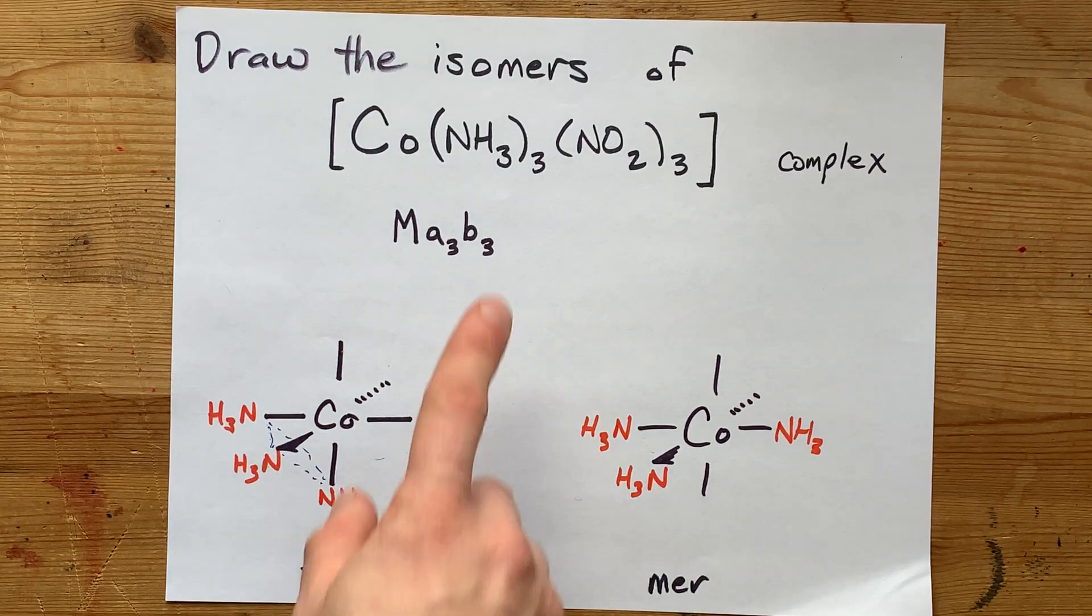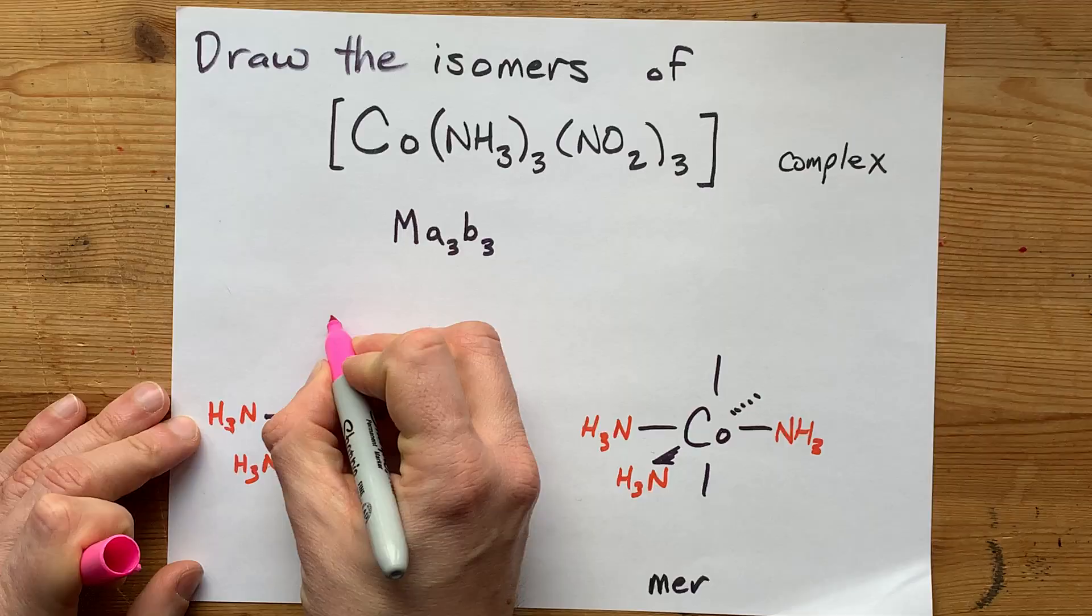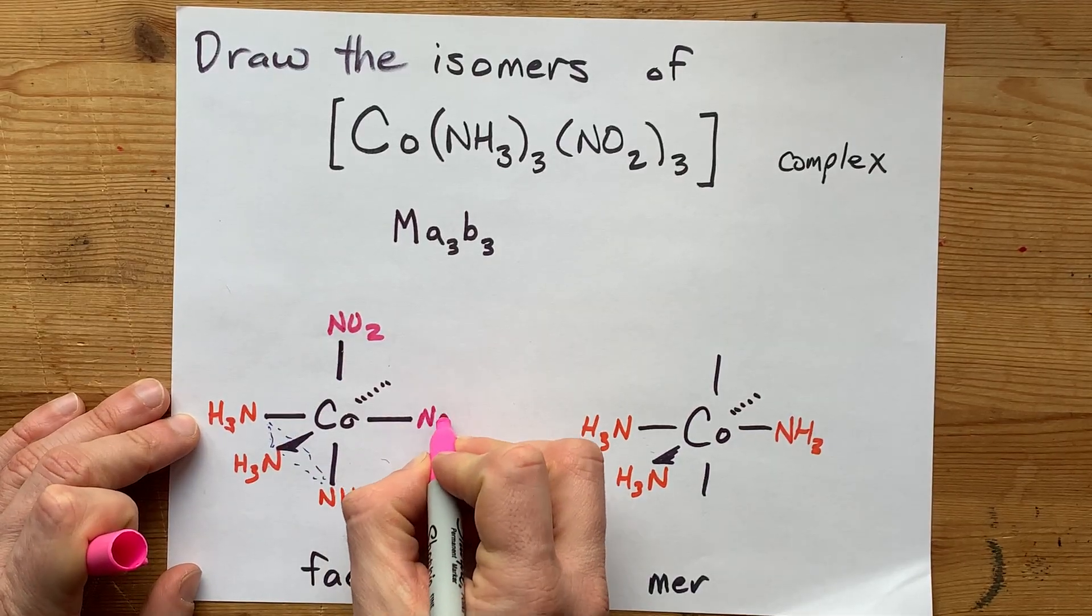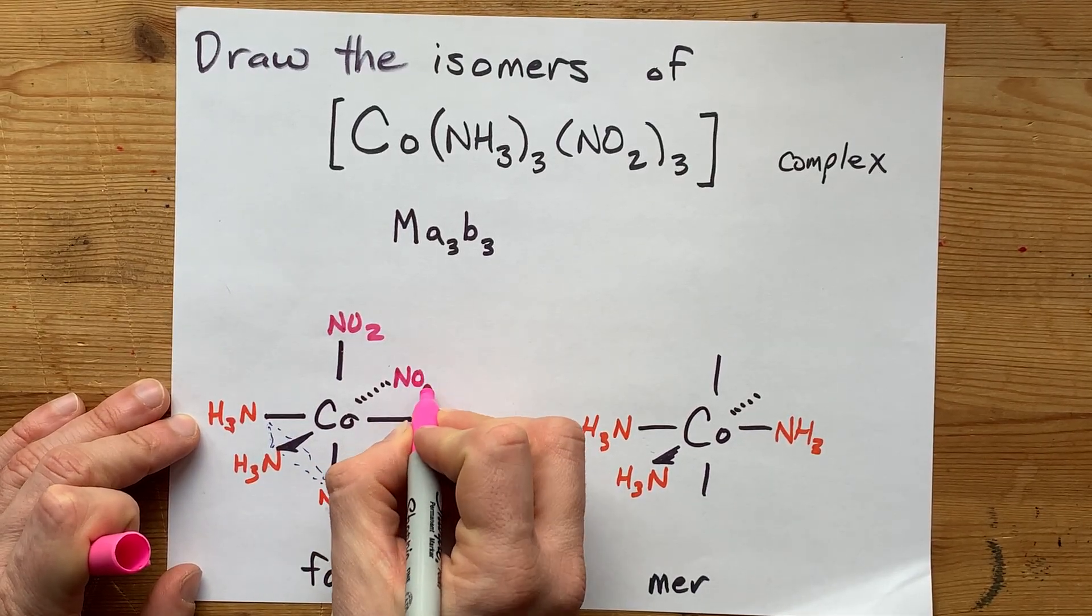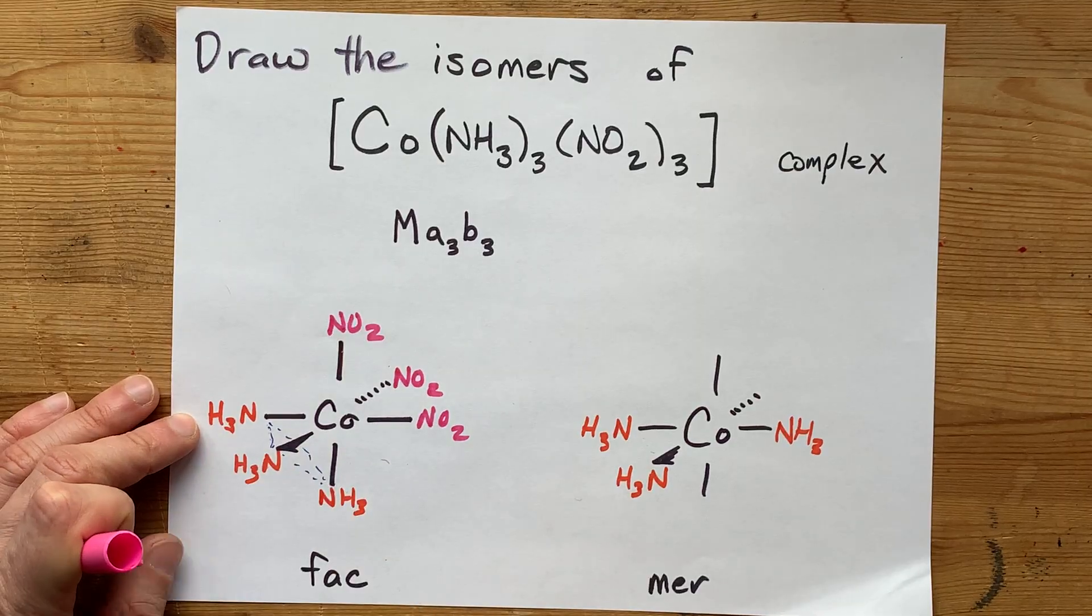And then lastly, I've got to add my NO₂s, or I wouldn't be done. The point is the FAC isomer has all three clustered on one side.